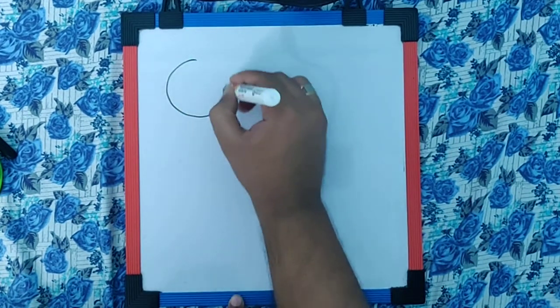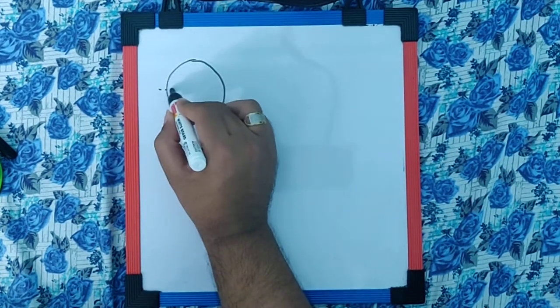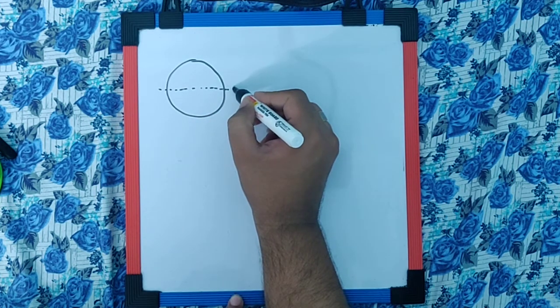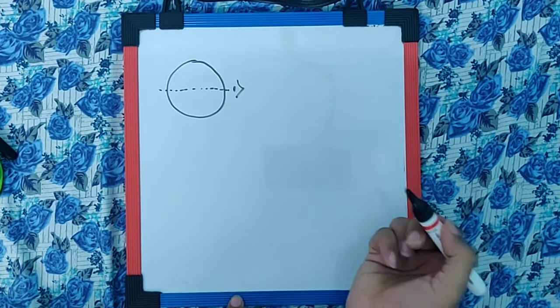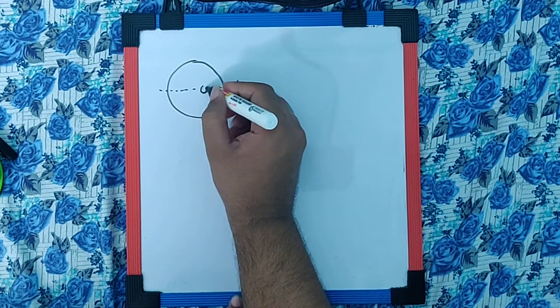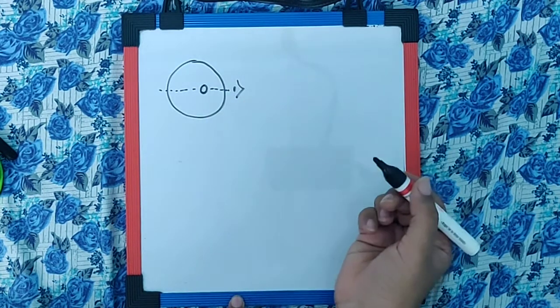Now I can assume this to be the glass sphere. This is the axis along which the observer is watching through and let's say this is where the air bubble is placed.